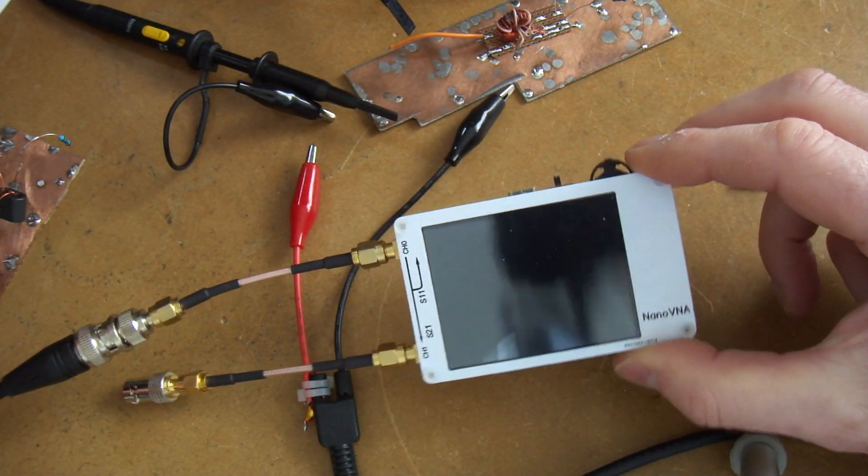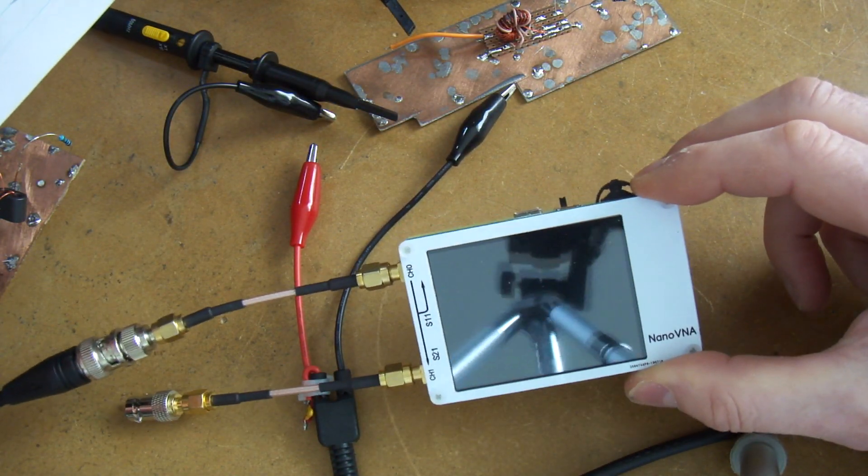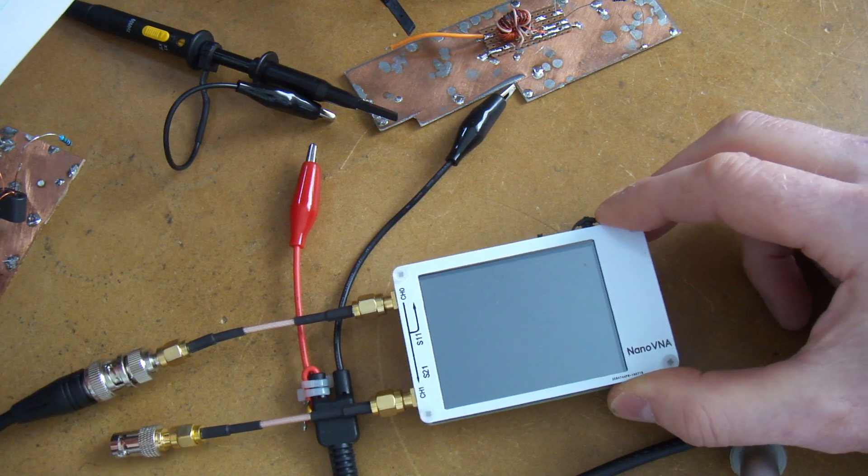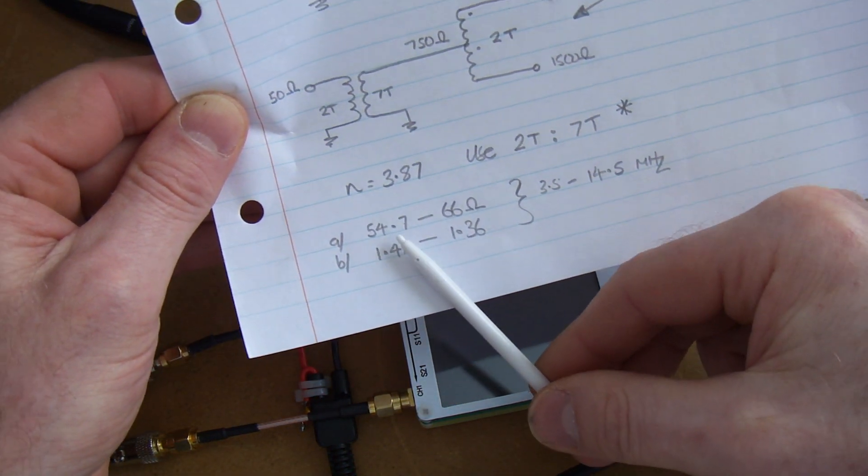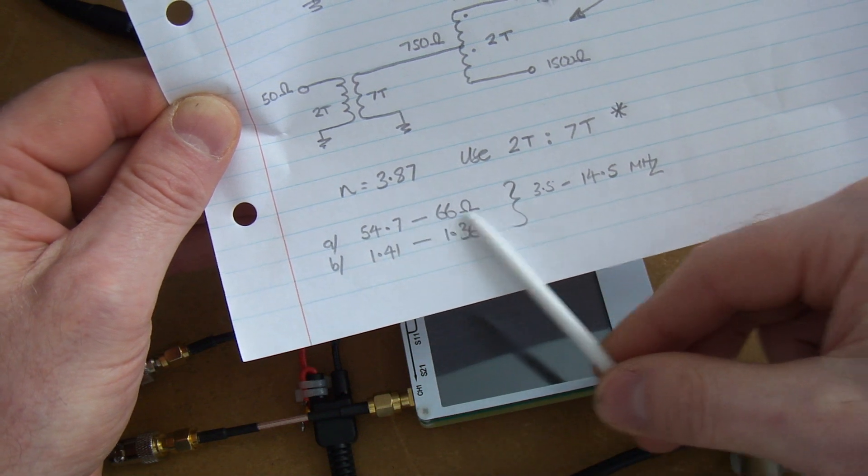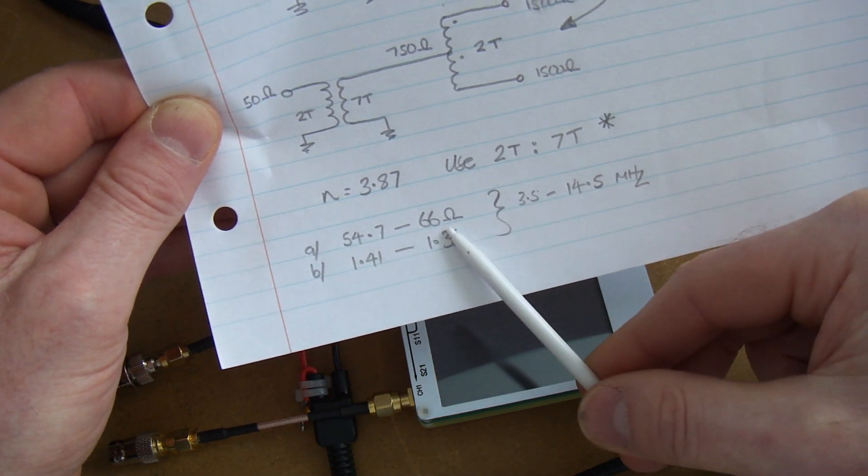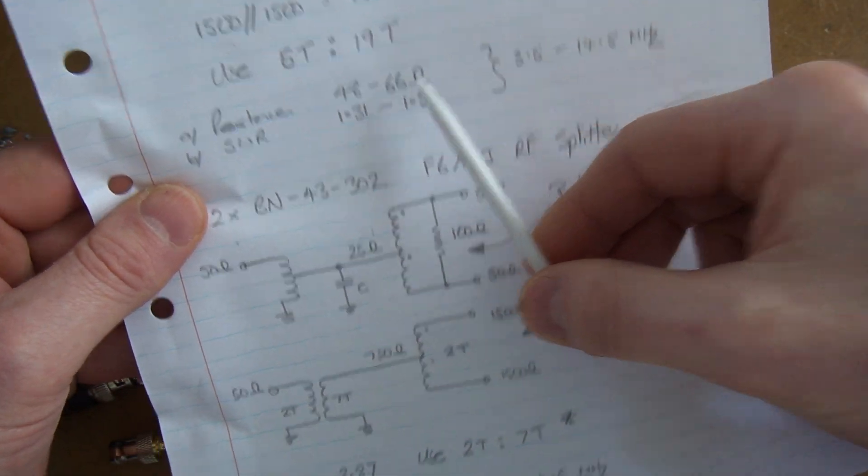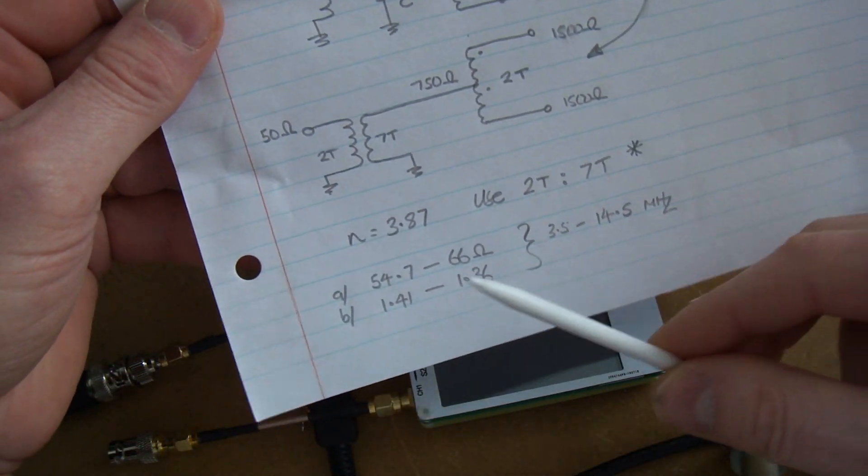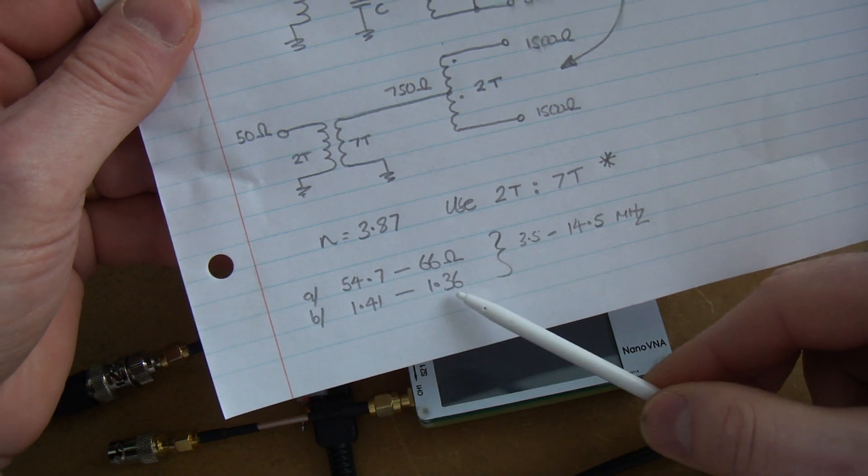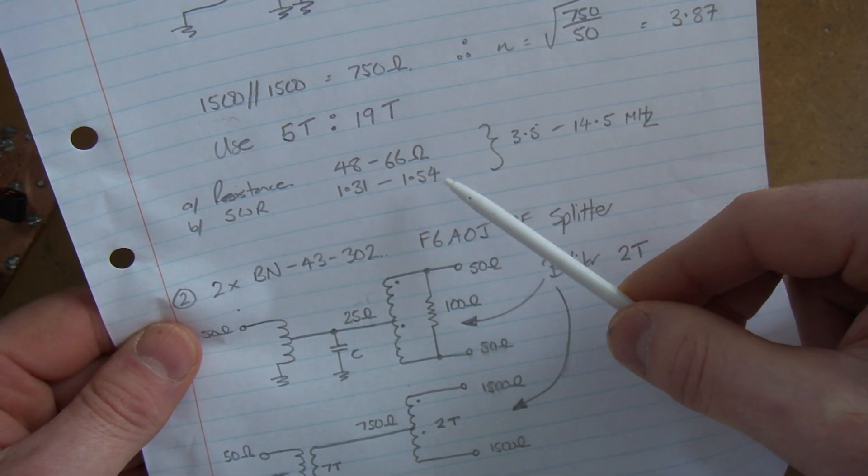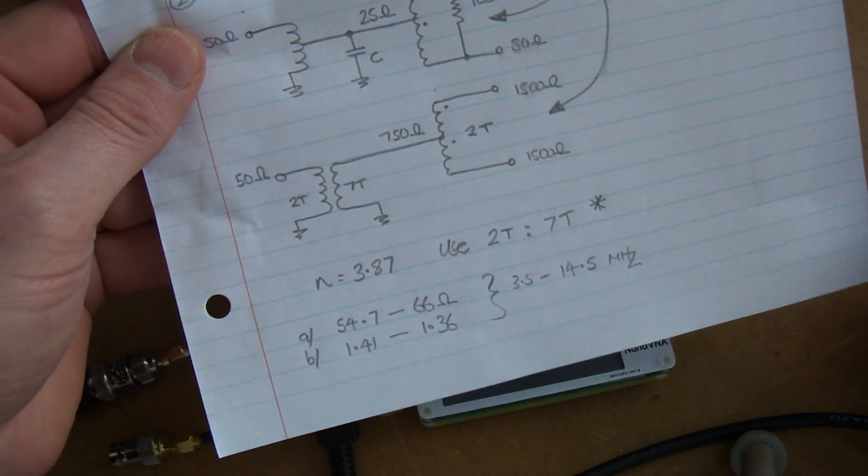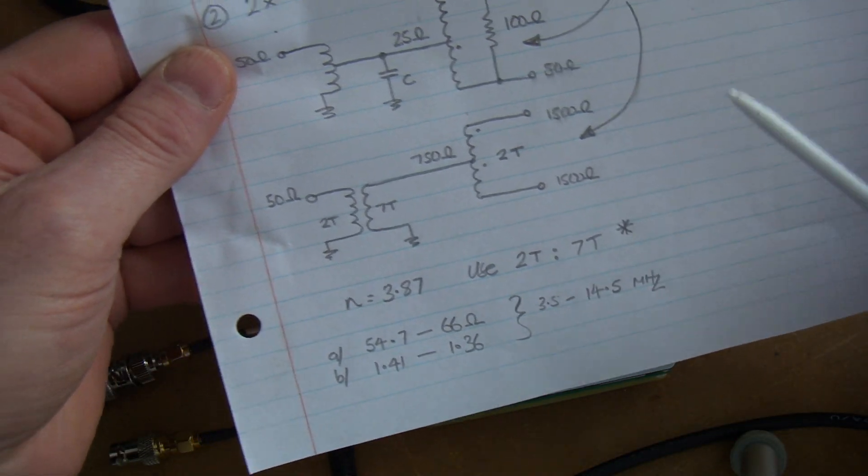When I used the nano VNA to run through exactly the same process as before, I had a resistance variation of 54.7 through to 66, as opposed to 48-49 through to 66, and an SWR of 1.31 to 1.54, so very similar across that frequency range.